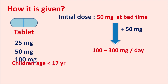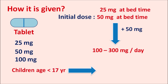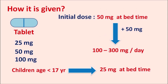In children under 17 years of age, the initial dose is 25 mg given at bedtime. The dose may be slowly increased in increments of 25 mg, with a recommended dose of 100 to 200 mg per day.